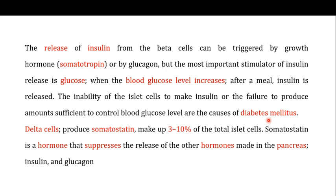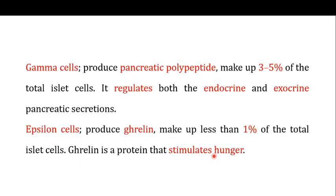The third type are the delta cells, which produce a hormone known as somatostatin. Delta cells make up about three to ten percent of total islet cells. Somatostatin is a hormone that suppresses the release of other hormones made in the pancreas, especially insulin and glucagon.